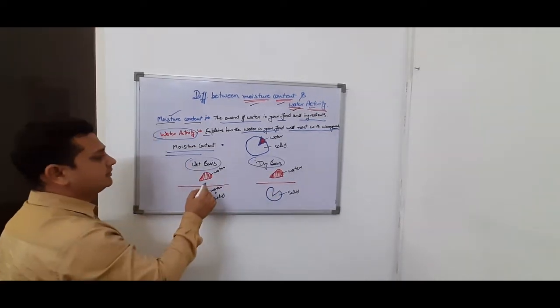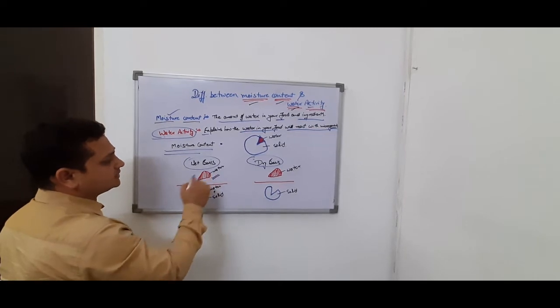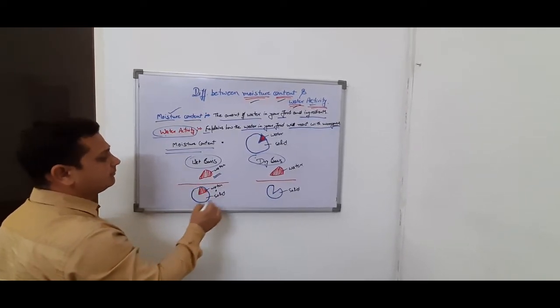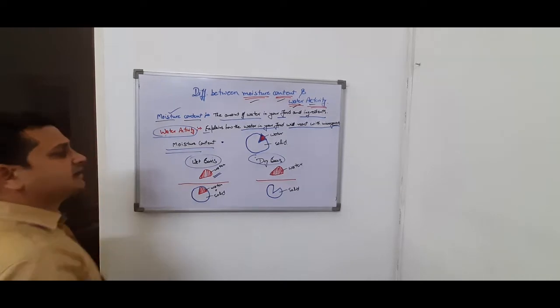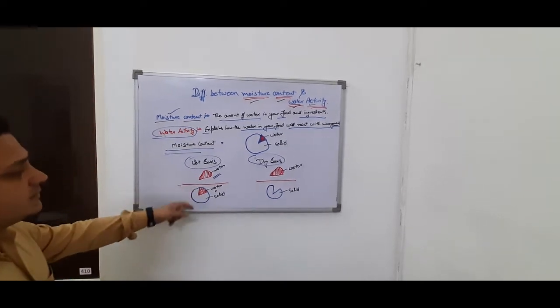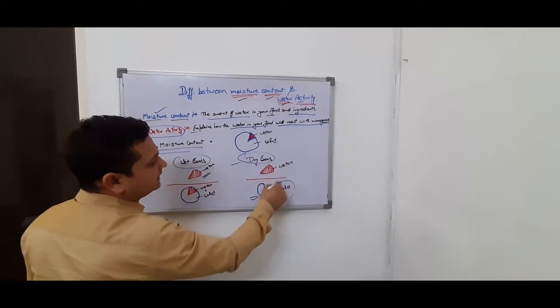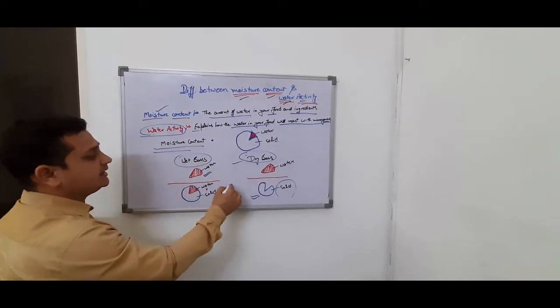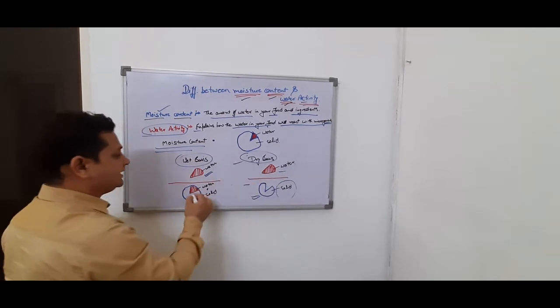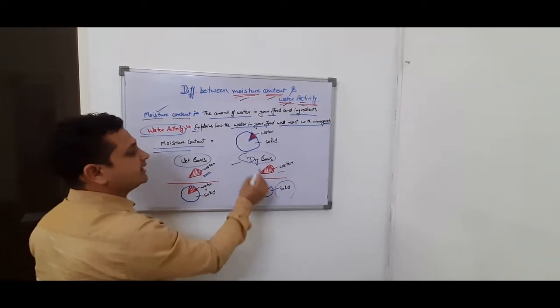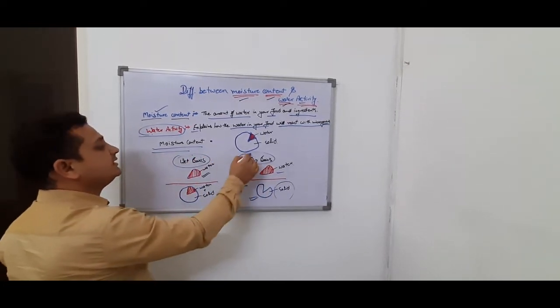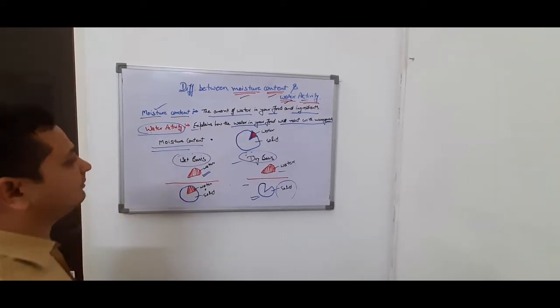What is wet basis? The water part divided by the water part plus the solid part. The complete total weight comes from both. But if it is dry basis, the solid part is in the bottom and only the water part is on top. So this is the difference between wet basis and dry basis.